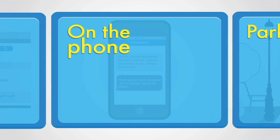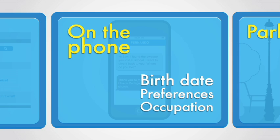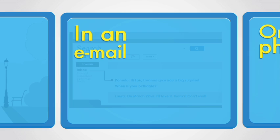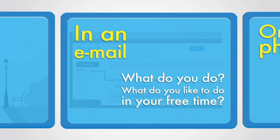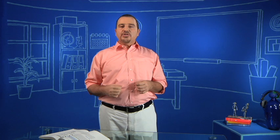Texting a message on the phone is another situation — you will probably give your birthday, preferences, occupation. In an email, there are very important questions to ask or respond, for example: What do you do? What do you like to do in your free time? When is your birthday? These are some situations in which we provide personal information. Let's watch an example of what personal information we are supposed to provide in every situation I just mentioned.